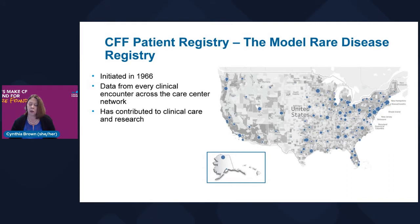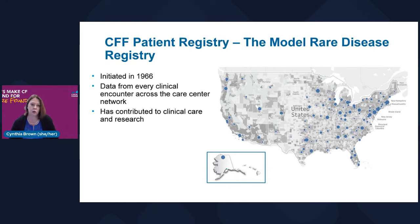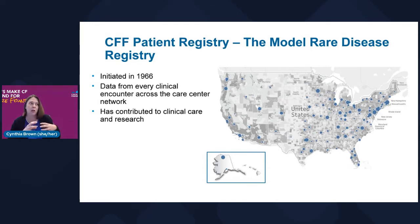The patient registry is the model — all other diseases want to be cystic fibrosis. This registry was initiated more than 50 years ago, and all care centers across the network put data into this registry at every touchpoint. Some of the biggest things we've learned have come from the registry and the wealth of data — things like how does nutrition in early life impact lung function, or what is the clinical course of different mutations. This allows us to consolidate information and find out things that there are too few people at any one center to learn.